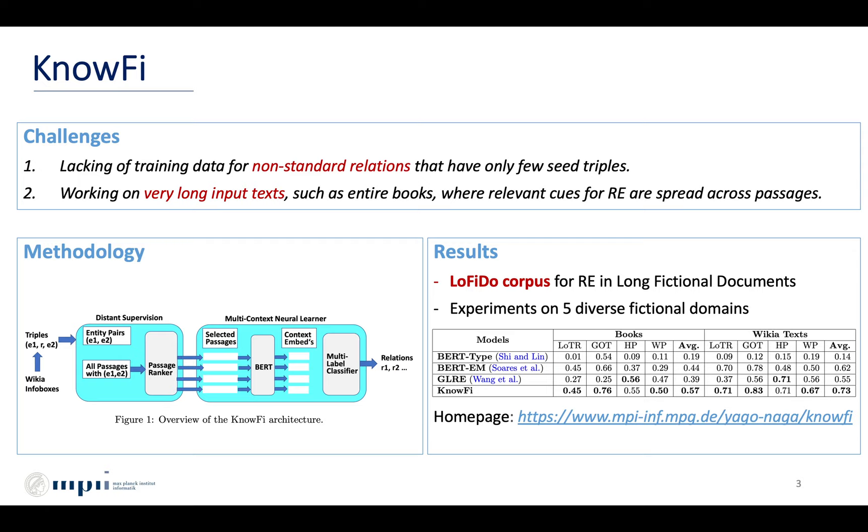Our method leverages semi-structured content in wikis of fan communities to extract background knowledge for 142 popular fictional domains. This serves to identify interesting relations and to collect distant supervision samples.